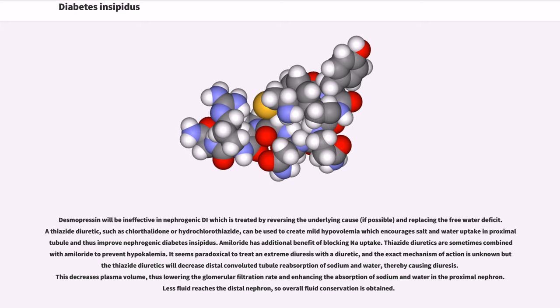Desmopressin will be ineffective in nephrogenic DI which is treated by reversing the underlying cause and replacing the free water deficit. A thiazide diuretic, such as chlorthalidone or hydrochlorothiazide, can be used to create mild hypovolemia which encourages salt and water uptake in proximal tubule and thus improve nephrogenic diabetes insipidus. Amiloride has additional benefit of blocking Na uptake. Thiazide diuretics are sometimes combined with amiloride to prevent hypokalemia. It seems paradoxical to treat an extreme diuresis with a diuretic, and the exact mechanism of action is unknown but thiazide diuretics will decrease distal convoluted tubule reabsorption of sodium and water, thereby causing diuresis. This decreases plasma volume, thus lowering the glomerular filtration rate and enhancing the absorption of sodium and water in the proximal nephron. Less fluid reaches the distal nephron, so overall fluid conservation is obtained.